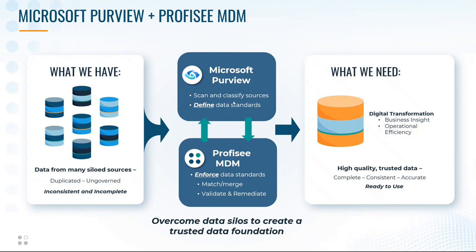Purview is there to scan and classify sources, amongst other things, and also to define data standards through which the data should be managed or governed. But it's important to note that Purview doesn't by itself actually do any governance and enforcement. It is Prophecy MDM, the master data management platform, that will enforce those standards across the data silos. It'll match and merge key information across those silos, validate that the data conforms to the governance standards set up in Purview, and where it doesn't, it can remediate that data. Essentially, we're using these two systems working together to overcome data silos and create a trusted data foundation.